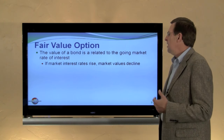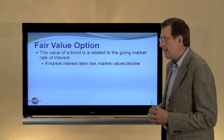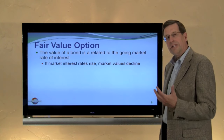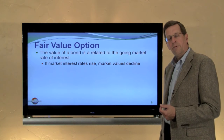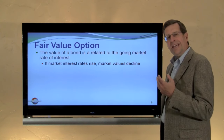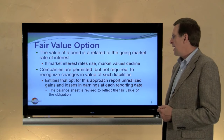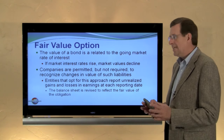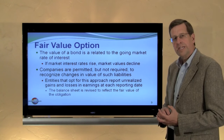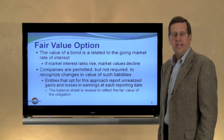Lastly, let's look at fair value accounting. The fair value option can be applied to debt. We talked about fair value accounting for investments in an earlier chapter, but there is also an option available to record debt at fair value. If market rates of interest rise, the value of the debt may decline, and the company could recognize that decline as a corresponding gain. Not many companies have yet elected this option, but it is available. Companies are permitted but not required to recognize changes in value of such liabilities. Entities that opt for this approach report unrealized gains and losses on that debt in earnings at each reporting date, and the balance sheet is revised to reflect the fair value of the debt. Once a company opts for fair value accounting for a particular debt instrument, they need to continue to apply that approach indefinitely into the future.